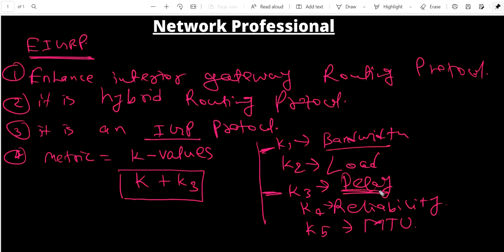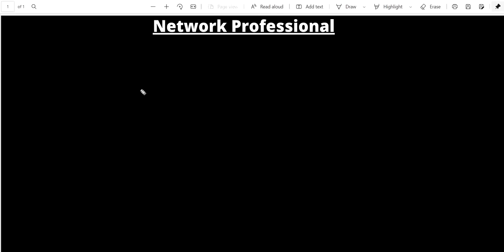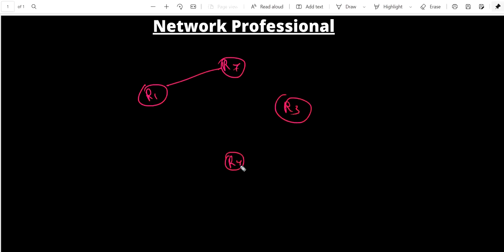By default, EIGRP uses K1 and K3, meaning bandwidth and delay. There are two types of K values: fixed and variable. Bandwidth and delay of an interface are always fixed, but load can vary.